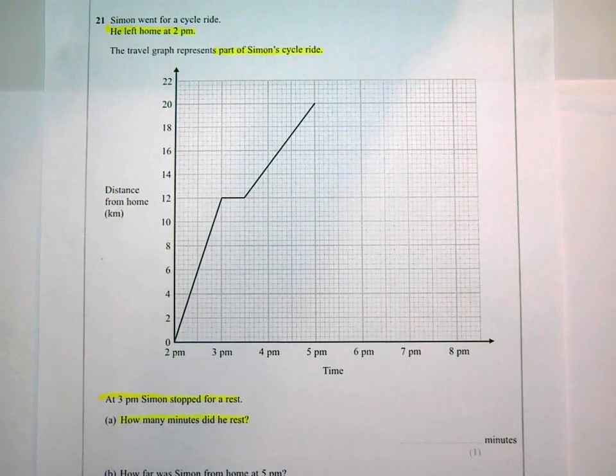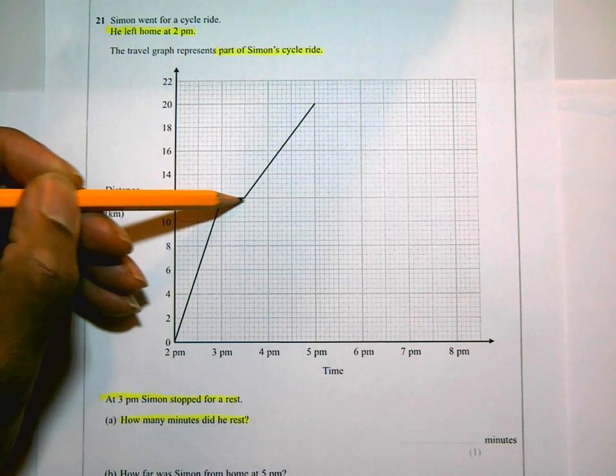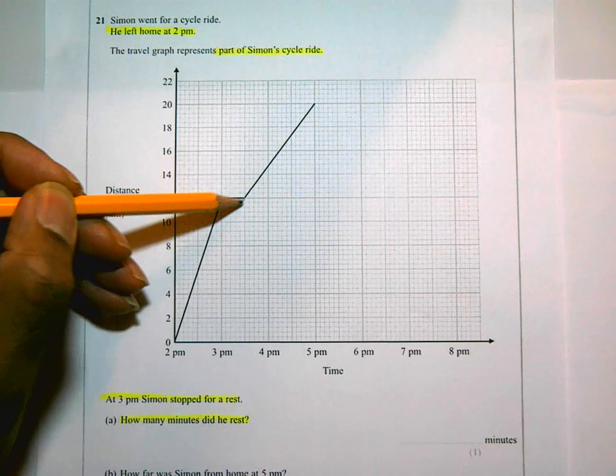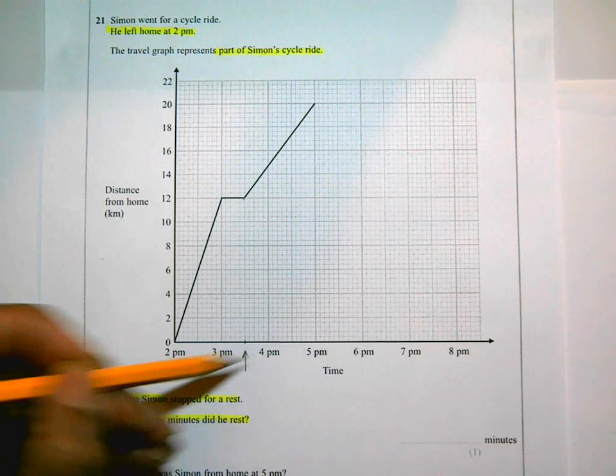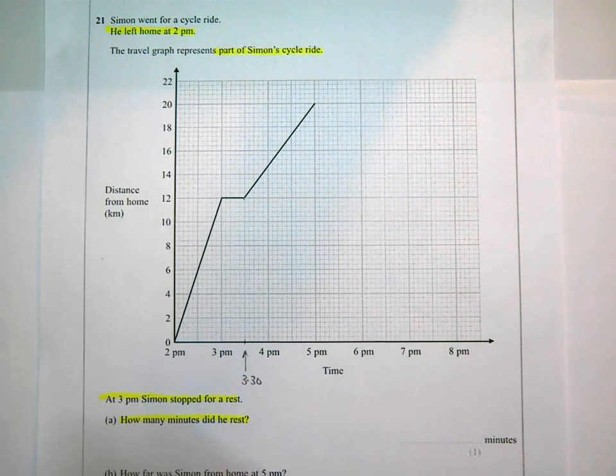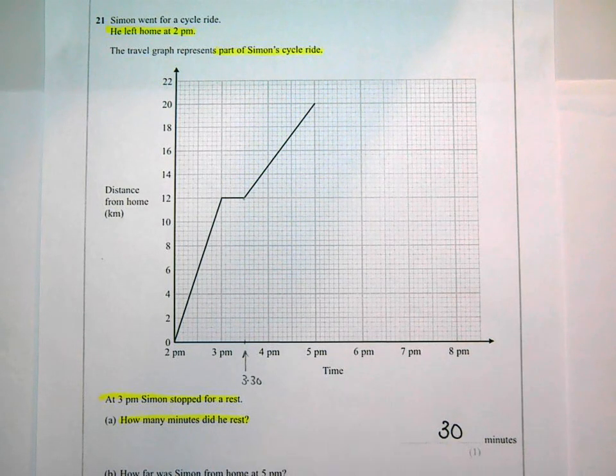How many minutes did he rest for? So he stopped for this period here and he started moving again over there. That is halfway between 3 and 4. I can tell that that's going to be 3:30. So how long did he stop for? Well, he stopped for 30 minutes. I think most people should be able to spot that and understand that bit so far.